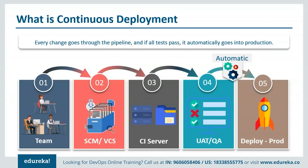Continuous delivery means you can deploy frequently, but the pace of change is set by business demand. If there's a change in business requirements, the dev team builds it, it passes through all stages, and only when the business decides it's ready is it deployed to production. In continuous deployment there is no release approval board — code moves automatically from the developer side to the production side, which is not the case in continuous delivery.